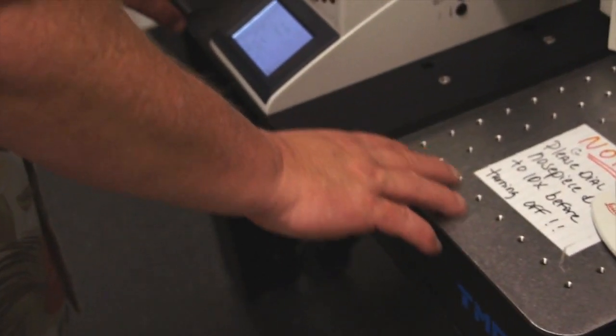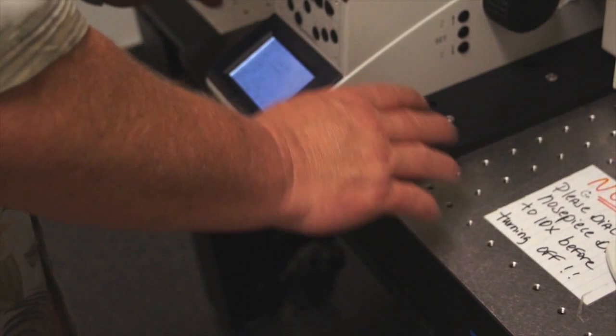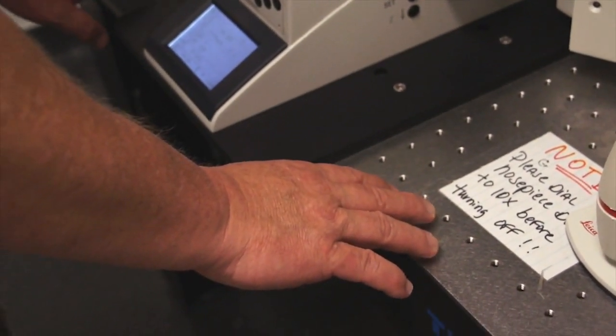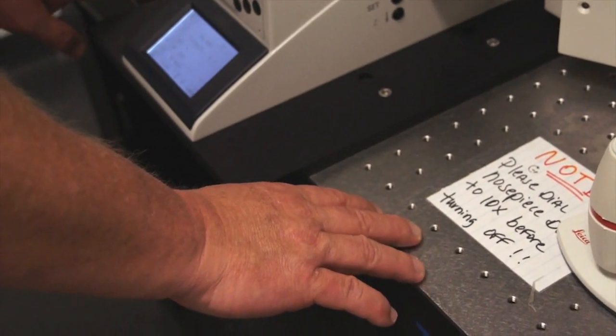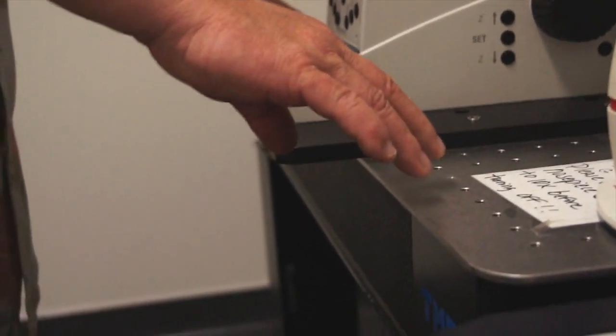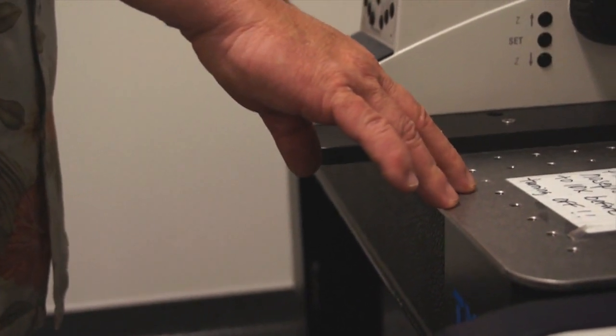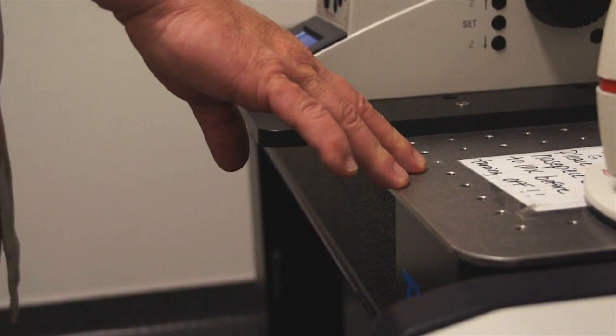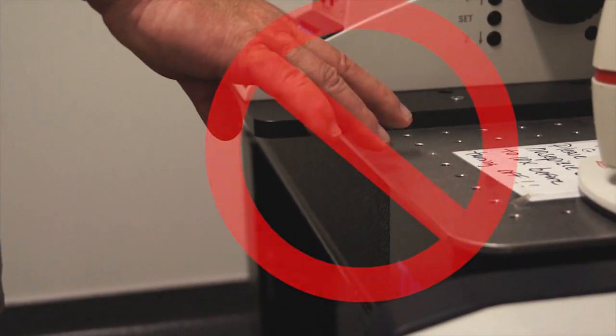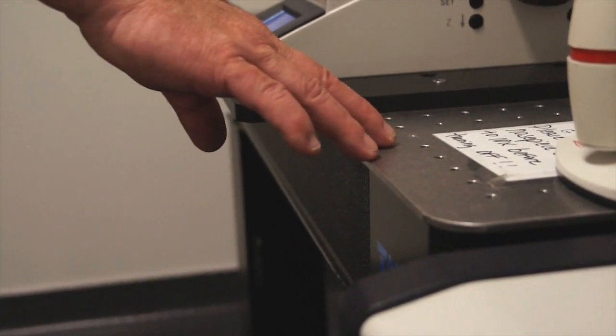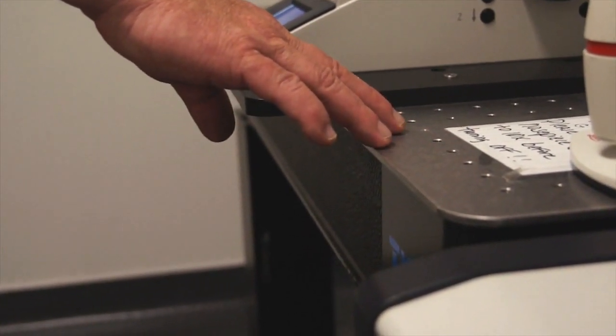Please understand that the table that supports the microscope is an air table. It's designed to reduce any vibrations that come from the building or traffic outside. If you press on the table, it will decompress and come back up. But we don't want people leaning on the table because that over exercises the air pump that keeps the air under the table in order to reduce vibrations.